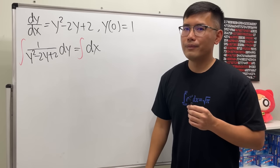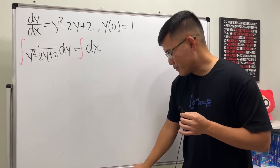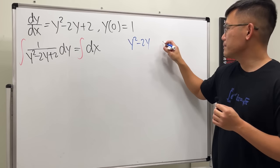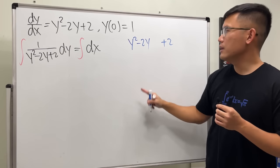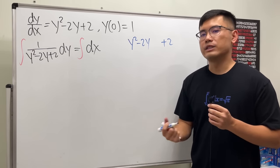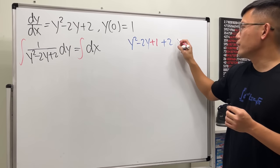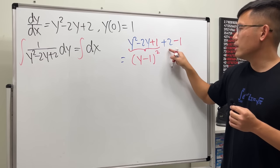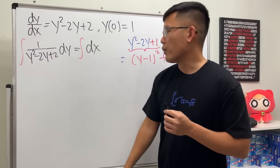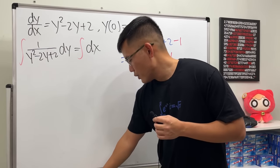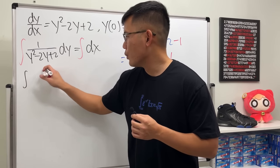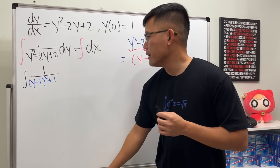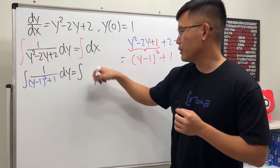We cannot factor y² - 2y + 2 with real numbers, so complete the square: y² - 2y + 1 - 1 + 2 = (y-1)² + 1. So the integral becomes 1/((y-1)² + 1) dy. Do a u-substitution with u = y-1, du = dy, giving the integral of 1/(u² + 1), which yields inverse tangent of u = arctan(y-1). The right side integrates to x + C, so arctan(y-1) = x + C, and therefore y = 1 + tan(x + C).